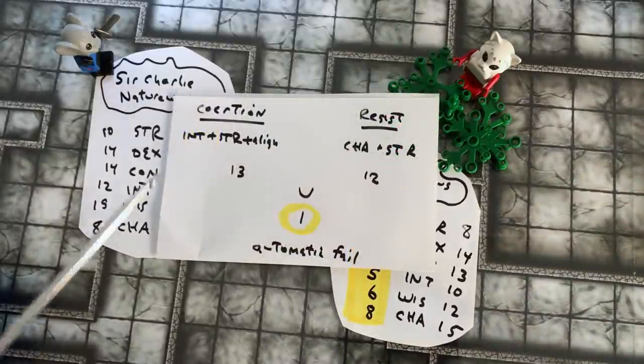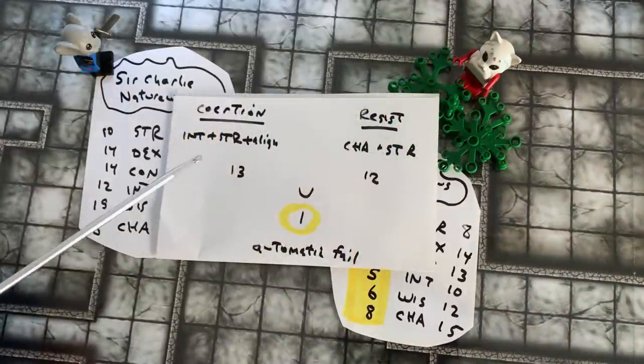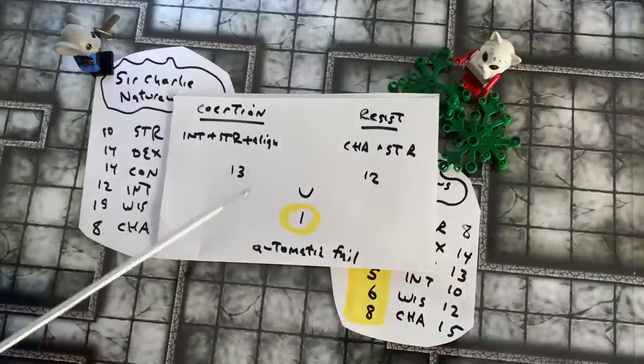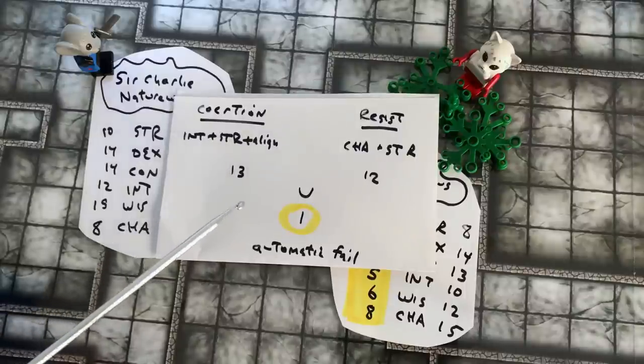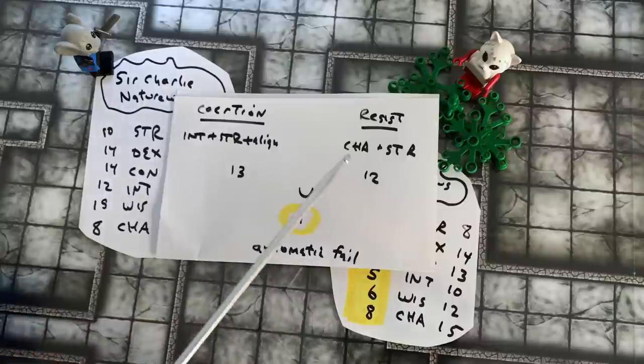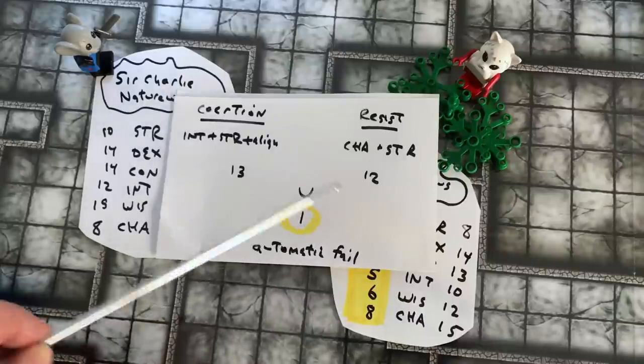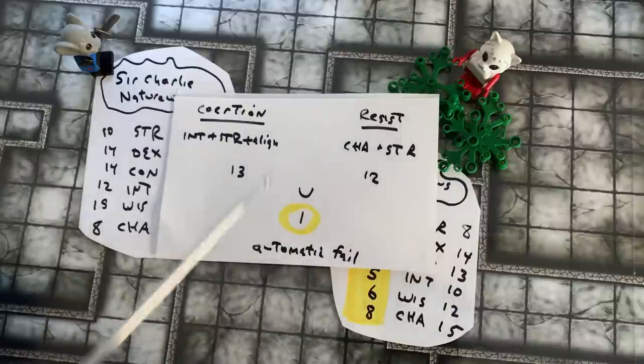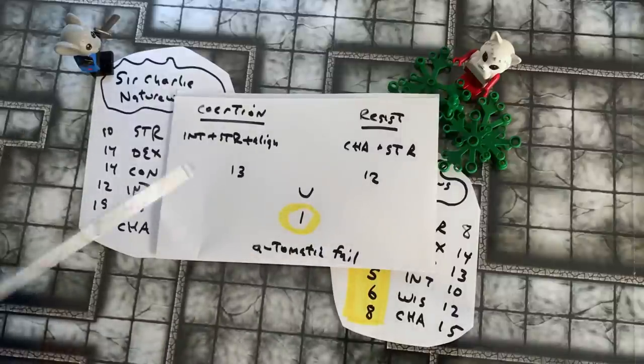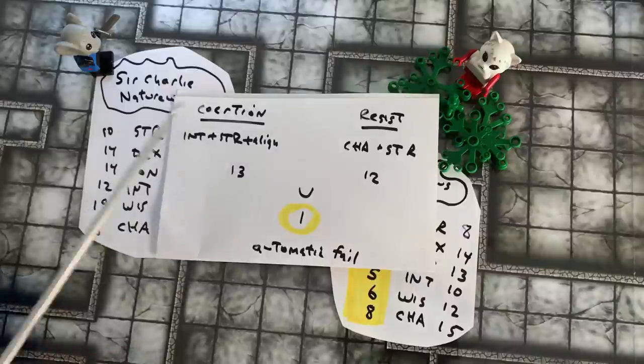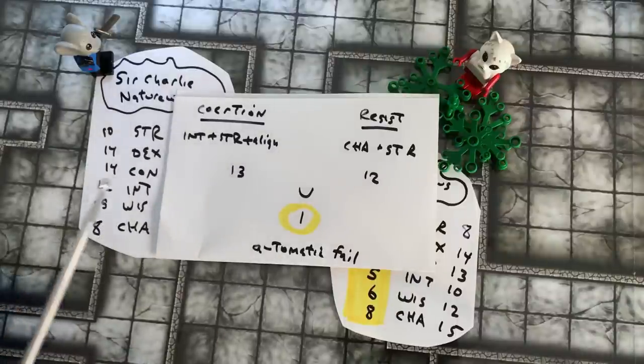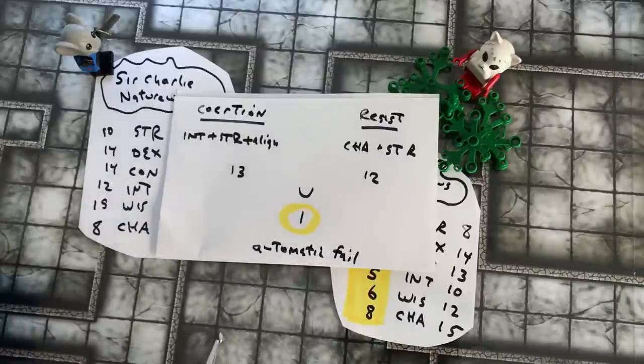In this instance you can see that his intelligence and strength and his alignment, which is a lawful good character, adds up to only 13, whereas her resistance to coercion, her charisma and strength, adds up to 12. The differential there of one means an automatic fail for him. So as a lawful good character, you can see that this type of approach to a social situation is not something that is going to be natural for him or necessarily very successful.